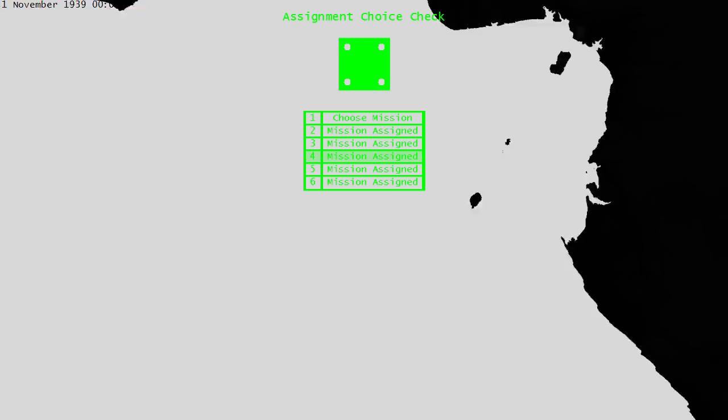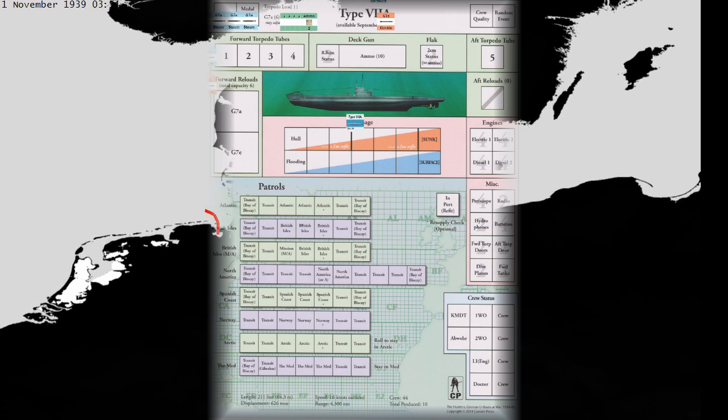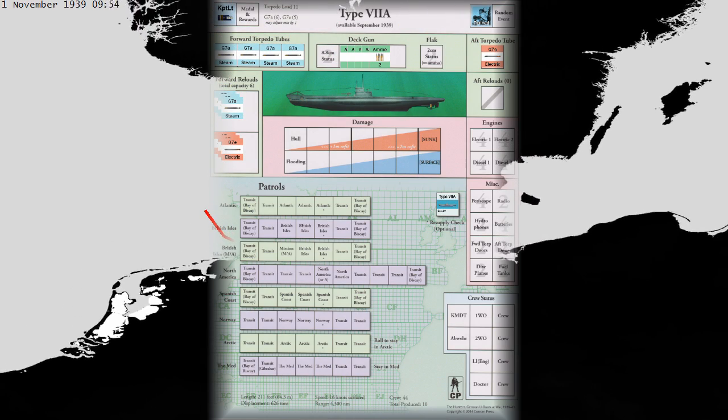While U-27 was in refit, we petitioned our superiors to let us choose our own assignment, but it turned out we didn't have enough influence. We were again assigned to the British Isles, but this time not to lay mines. On 1 November, the U-27 sails from Wilhelmshaven for the waters west of Britain.